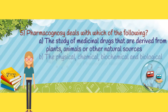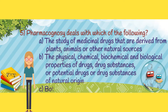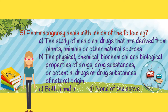Question 5. Pharmacognosy deals with which of the following? Option A: the study of medicinal drugs that are derived from plants, animals, or other natural sources. Option B: the physical, chemical, biochemical, and biological properties of drugs, drug substances, or potential drugs, or drug substances of natural origin. Option C: both options A and B. Option D: none of the above.